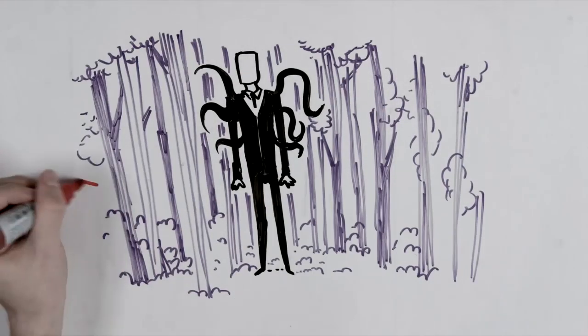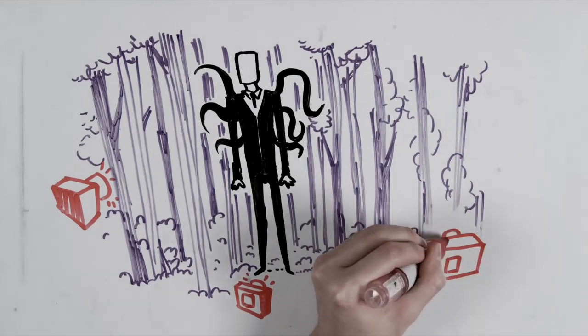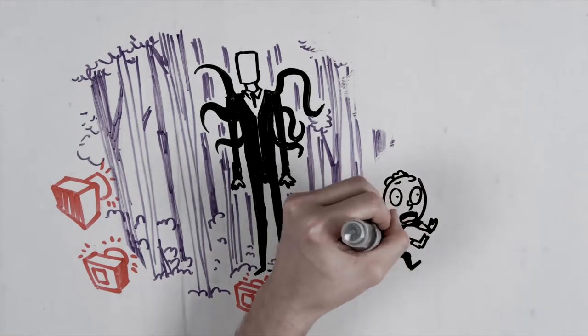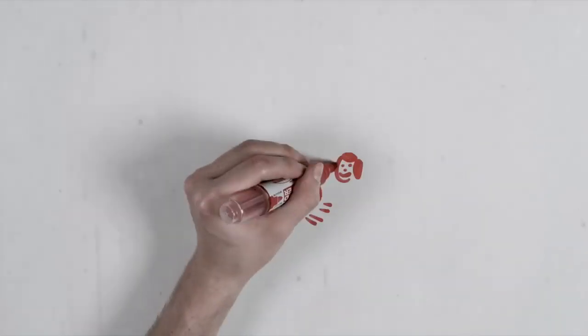It is said that Slenderman likes wandering in the woods because people usually take pictures there and he likes to be in those pictures. He also has the ability to teleport and can cause paranoia, nightmares and even delirium in his victims. Strangely, they all go missing.